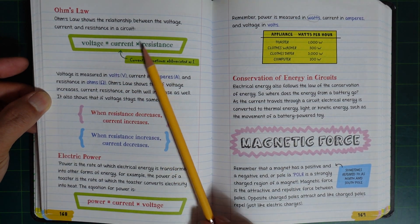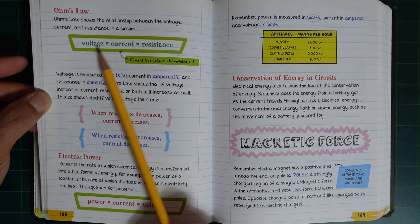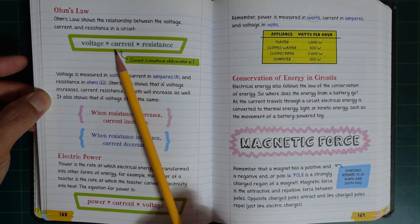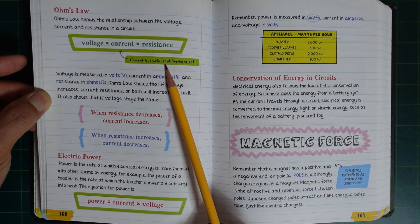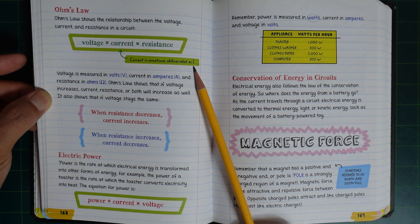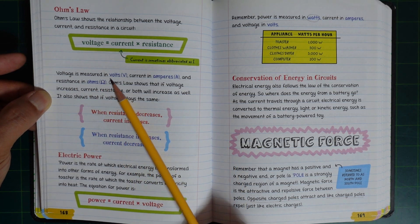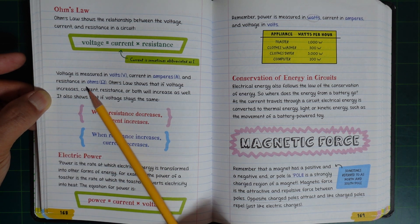Ohm's Law shows the relationship between voltage, current, and resistance in a circuit. Voltage equals current times resistance. Current is sometimes abbreviated as I. Voltage is measured in volts, current in amperes, and resistance in ohms.